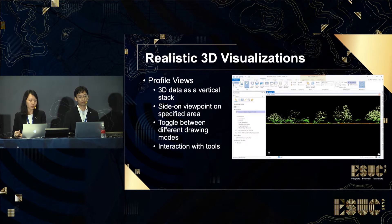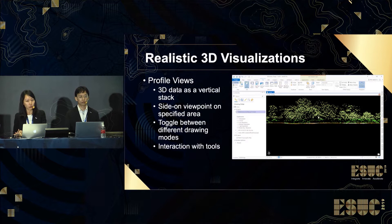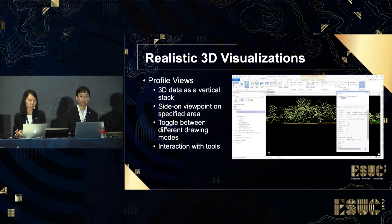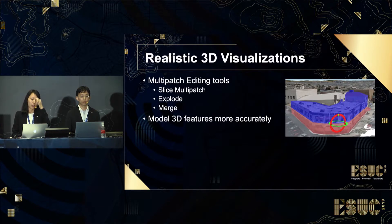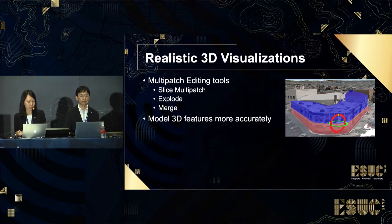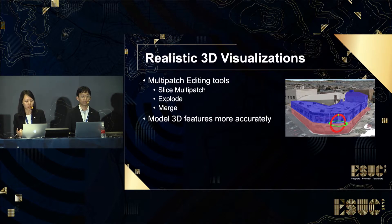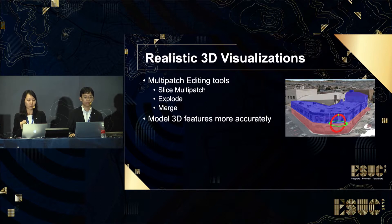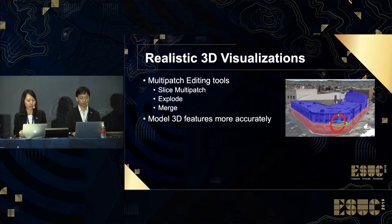The navigation experience also switches to planar navigation so you can pan across the scene rather than through it. You can apply other actions and interact with available tools such as selection, measure, and pop-up identification while in a profile viewing state. The multi-patch editing tools include Slice, Explode, and Merge. The Slice multi-patch tool splits up multi-patch features at a specific location using a horizontal or vertical cutting plane, allowing you to see the interior. The Explode tool separates multi-patch features into individual 3D faces to allow edits, and the Merge function combines all individual multi-patch features or faces back into a single multi-patch feature.